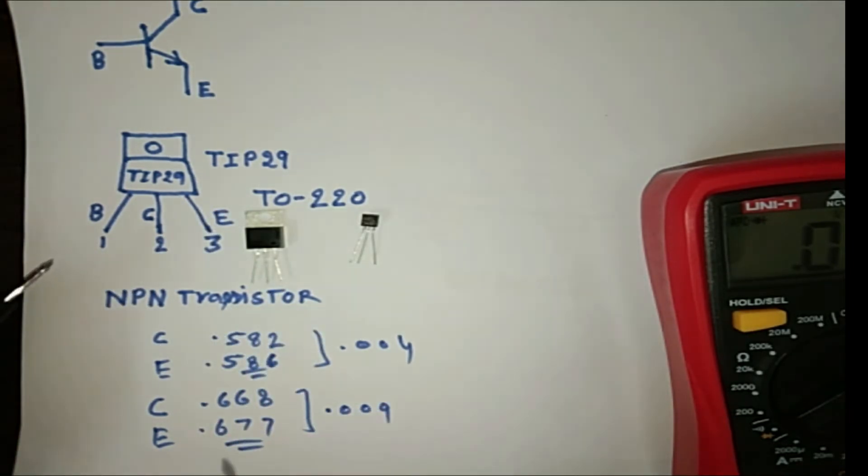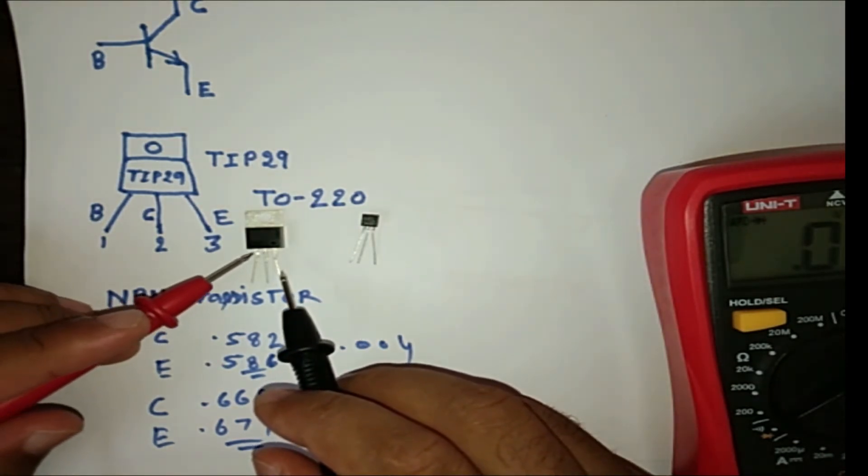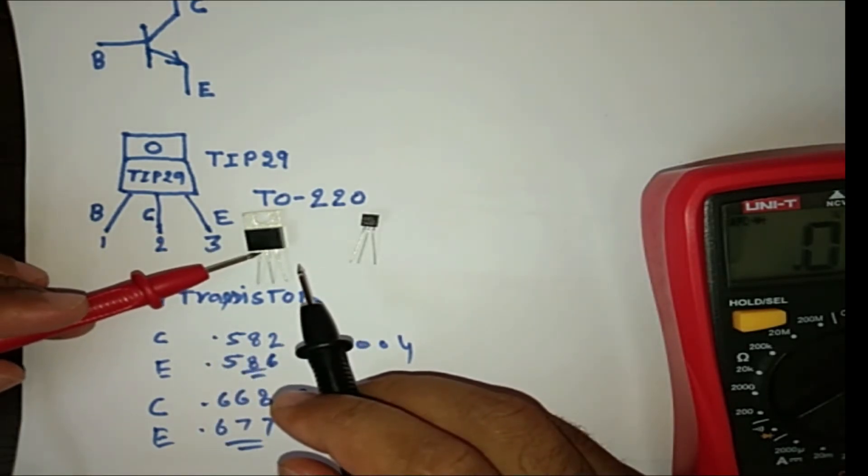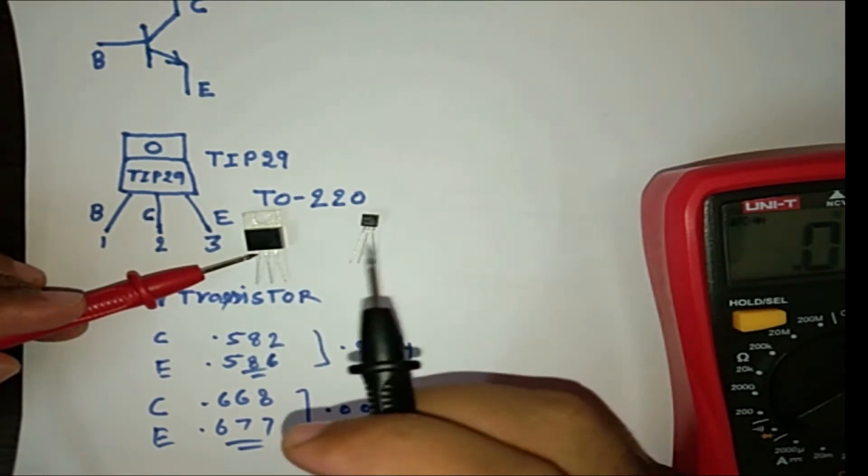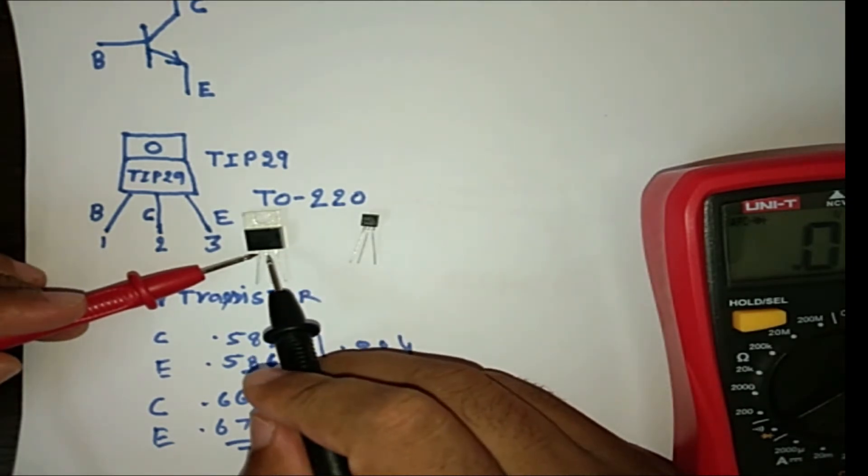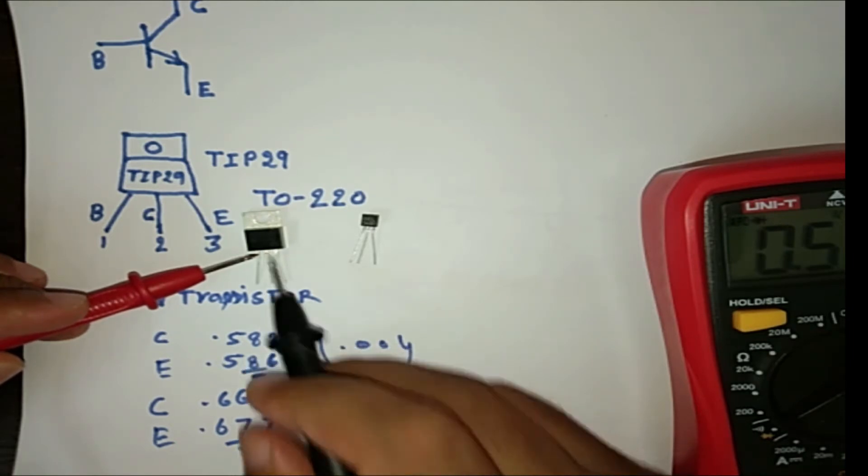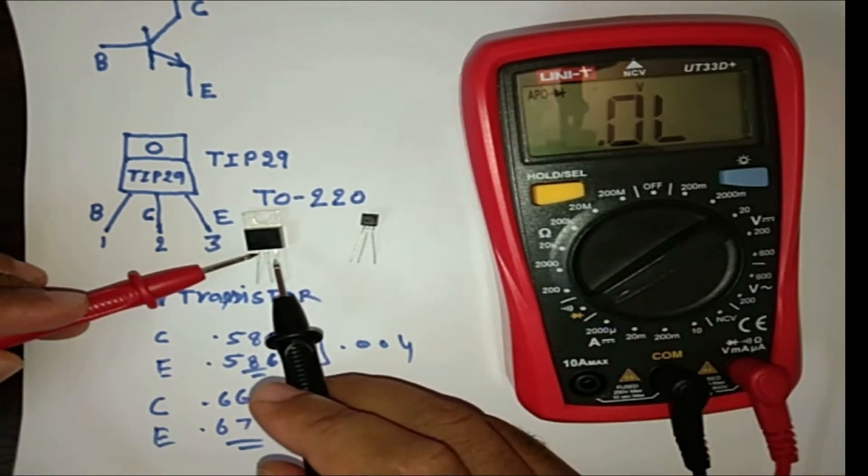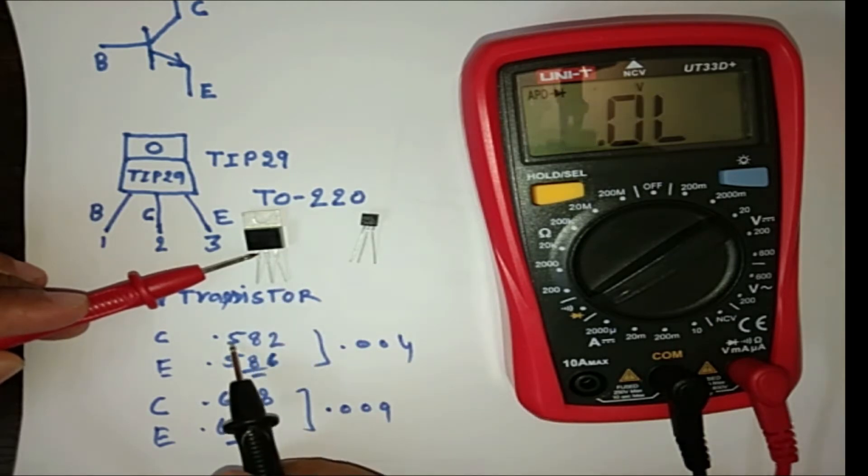So to test the transistor, we put the red lead on the base. Because this is NPN transistor. So you can put at the base, this red lead. And black lead, put first at collector. So you are getting some value 0.582. You can see here, in multimeter. You are getting the value 0.582. This value I note down.